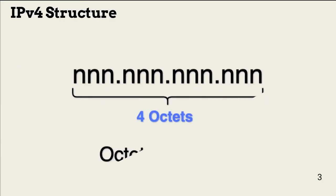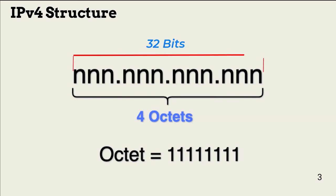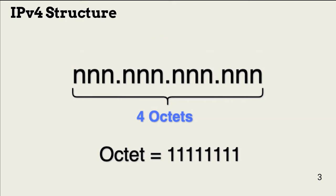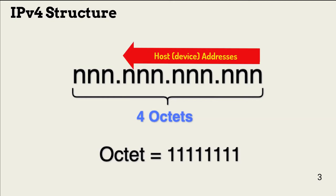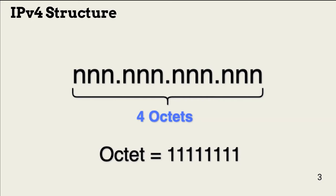An IPv4 address consists of four binary octets for a total of 32 bits. The configuration of the octets determines network address and device address. Beginning at the left, one, two, or three octets represent a network or network segment, depending on the address class. Similarly, the device or host addresses begin at the right and move left. There are two ways that network address and device address are handled: either classful or classless.